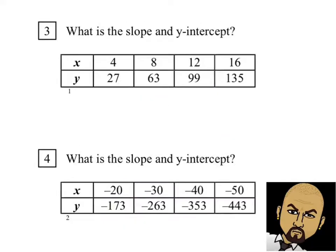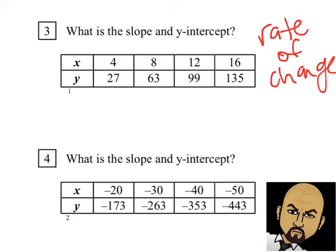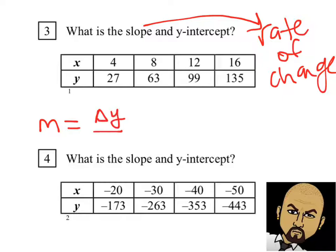Let's move on to a table. Now, we've already learned how to figure out the slope from a table — actually, we've learned the rate of change. The rate of change from a table is going to be the same thing as the slope. So let's figure out the slope, which is the change in y over the change in x.